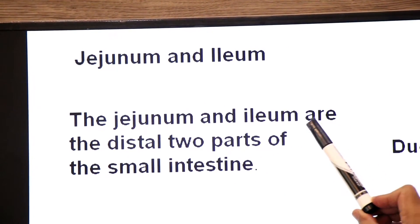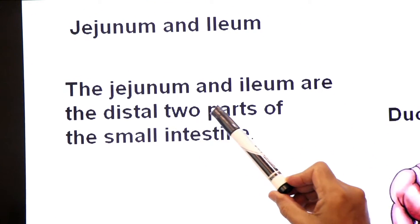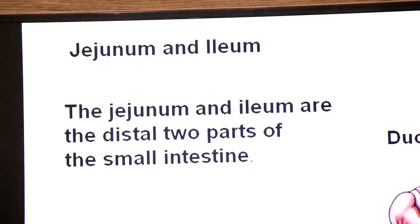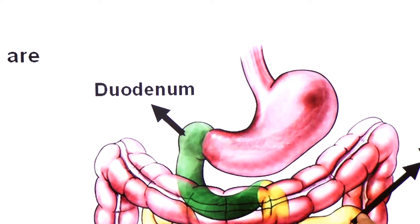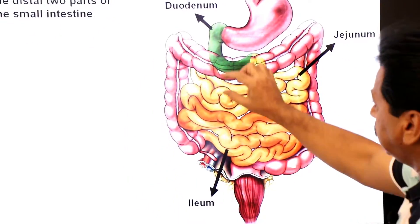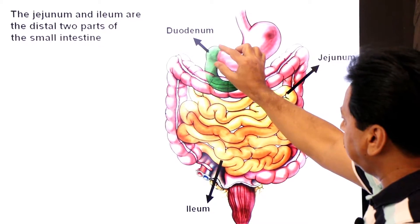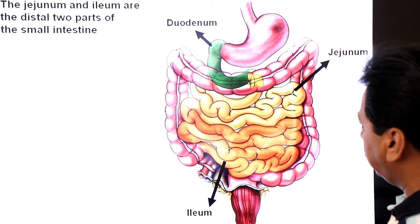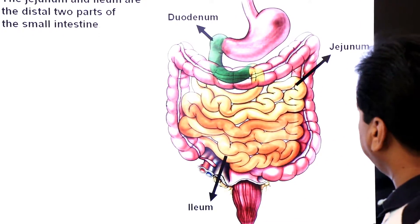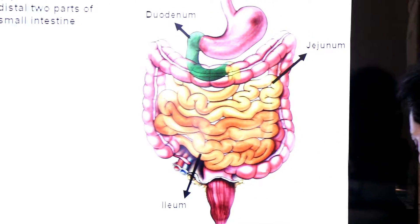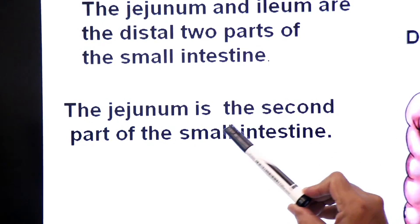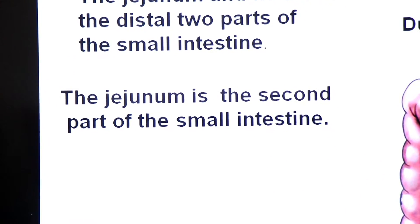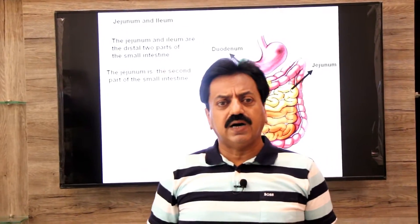The jejunum and ileum are the distal two parts of the small intestine. Proximal means near to the point of attachment; distal means away from the point of attachment. Jejunum is the second part of the small intestine, and today we will study jejunum and its histology.